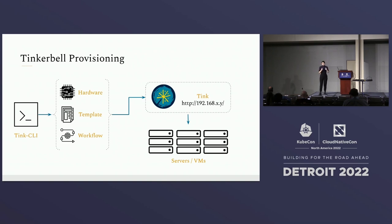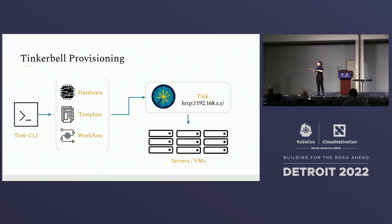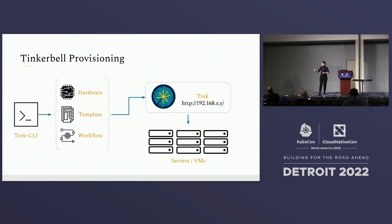Once you have all three sets of configuration, you use the Tink CLI to send them to the Tink server. The Tink server should be up and running within your environment. By the end, you take the hardware and available actions and perform all of the specified actions — so by the end you have a server or VM in the production state you wanted.